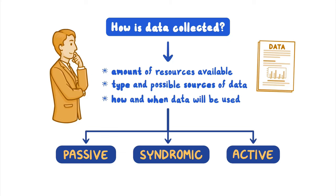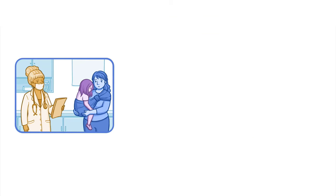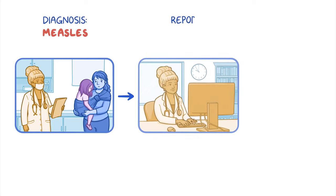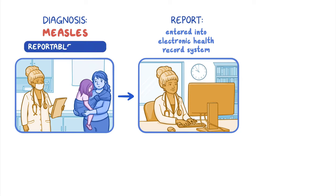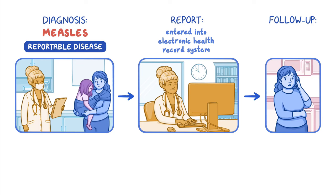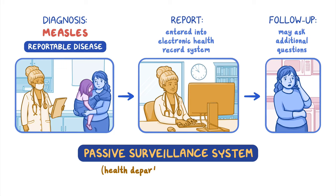In a passive surveillance system, if a doctor diagnoses measles in a child, the doctor will enter her report into an electronic health record system. A series of automatic events will identify this case of measles as a reportable disease and automatically send the report to the public health department. The health department may follow up by calling the patient or their parent, if a minor, to ask additional questions concerning possible exposure. This is a passive surveillance system because the health department waits passively for the reports to come in.